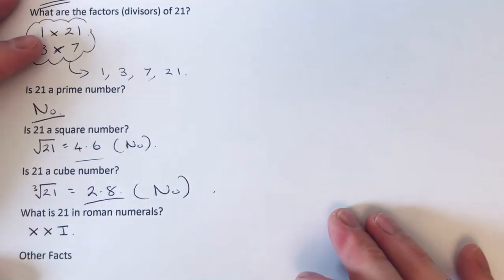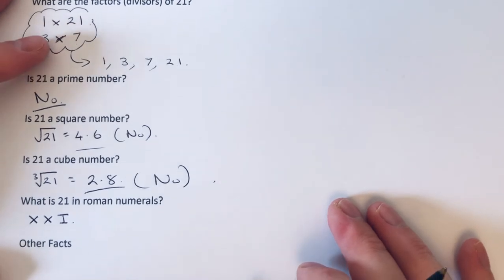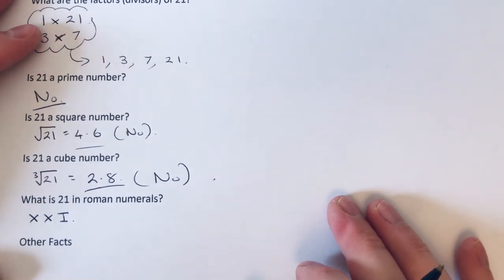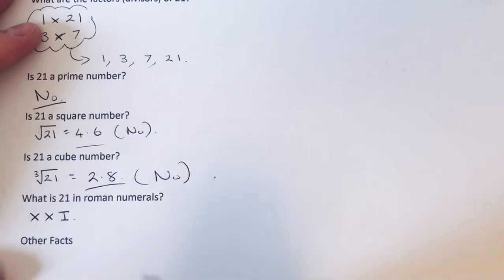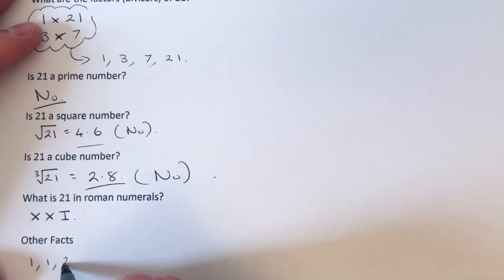What are the other facts of 21? Well, 21 is in the Fibonacci sequence. If we start with 1 and 1, add those together, which is 2. Then add the last two terms: 1 + 2 = 3. Add the last two terms again, which is 5. Add the last two terms again, which is 8.